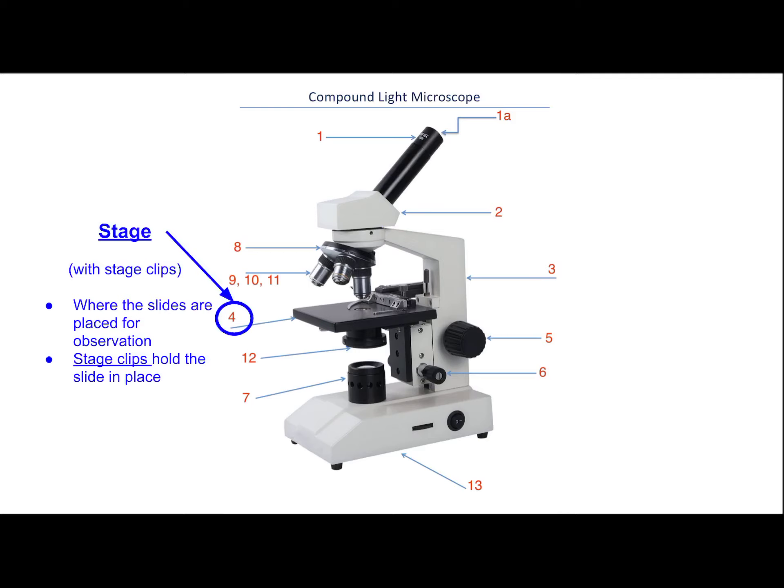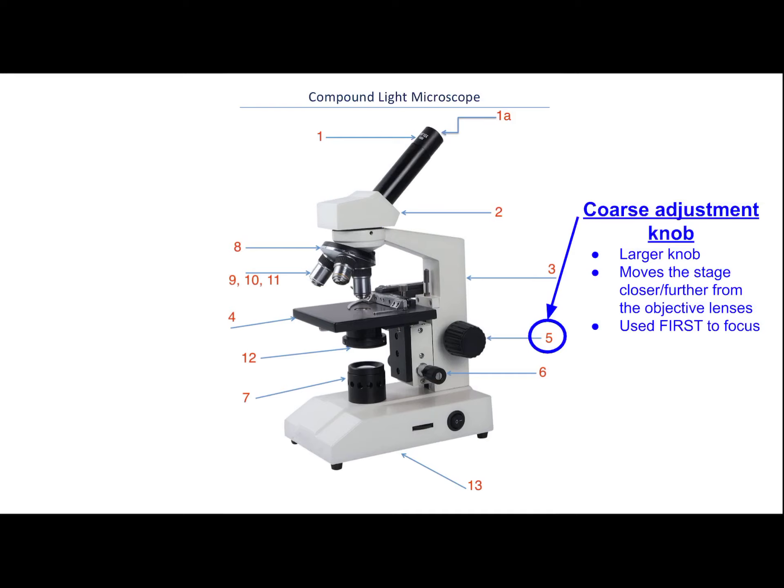Part number four is the stage. The stage has stage clips on it — this is where you put the slide. The slide is placed on the stage for observation, and stage clips should be used to hold the slide in place. You press down on the back and the front part will lift up so you can put the slide in. You should make a habit of using the stage clips because if the microscope gets bumped, you might lose what you were looking at.